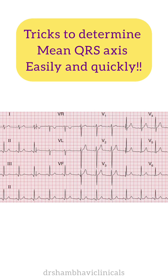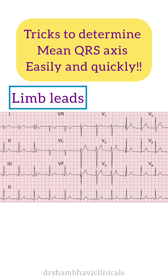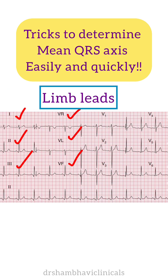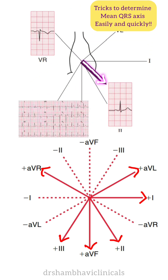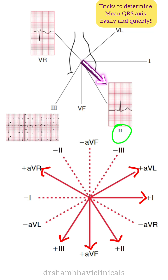For calculating the mean QRS axis, you need to look only at limb leads. Now look at this vector diagram, also called the hexaxial lead diagram. The arrow points towards the positive pole of each respective lead. So if the electrical activity is towards the positive pole, then a positive deflection is recorded in that lead. And if it's in the opposite direction, then a negative deflection is recorded in that lead.